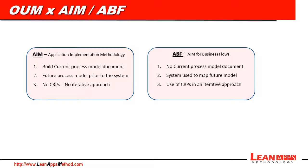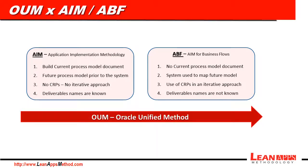A fourth difference: deliverable names are much more known at AIM than at ABF. OUM Unified methodology combines both methods — AIM and ABF — concerning deliverables, templates, documents, annotations, and adds a few new ones.